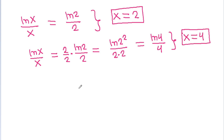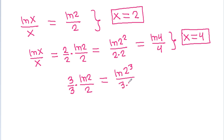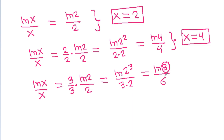And we have ln 2 by 2, and if we multiply it with 3 by 3, then it is ln 2 cube by 3 times 2, that is equal to ln 8 by 6. It is equal to ln x by x. So here, 8 is not equal to 6, so from here we cannot get any solution.